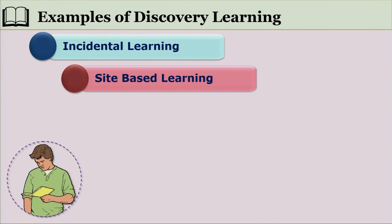Next is site-based learning. Children are taken to different sites where they do not compartmentalize knowledge as history, geography, or science — they explore the site as a whole situation, which we call holistic learning. For example, taking children to a place of historical interest like Qutub Minar allows them to use language, learn about the history, architectural uniqueness, surroundings, flora and fauna, and all that. This kind of learning inherently involves students inquiring into the site to find what knowledge it offers.